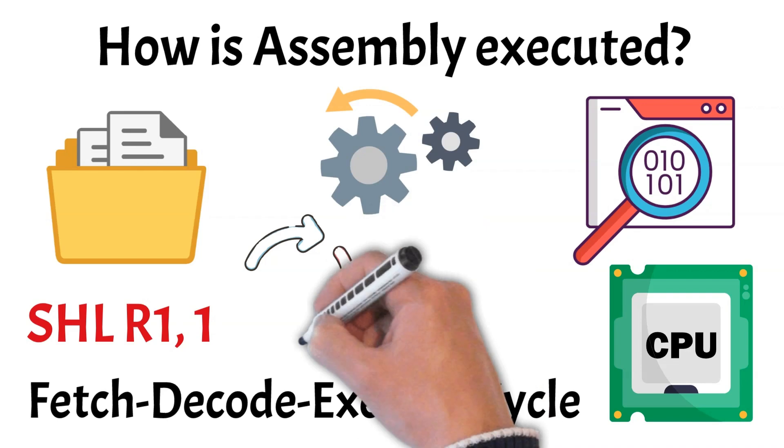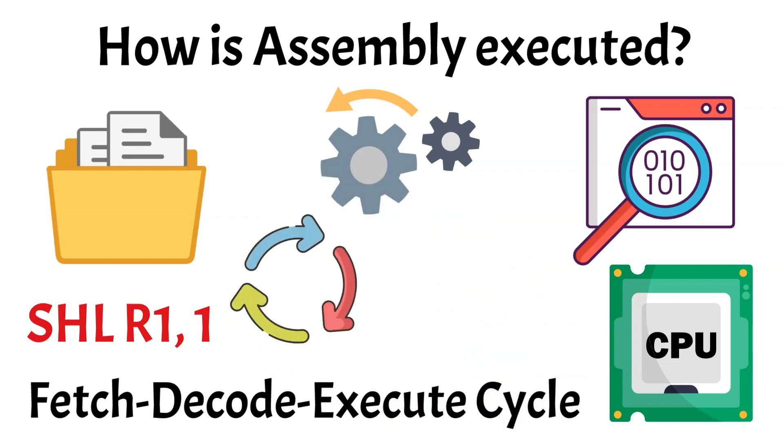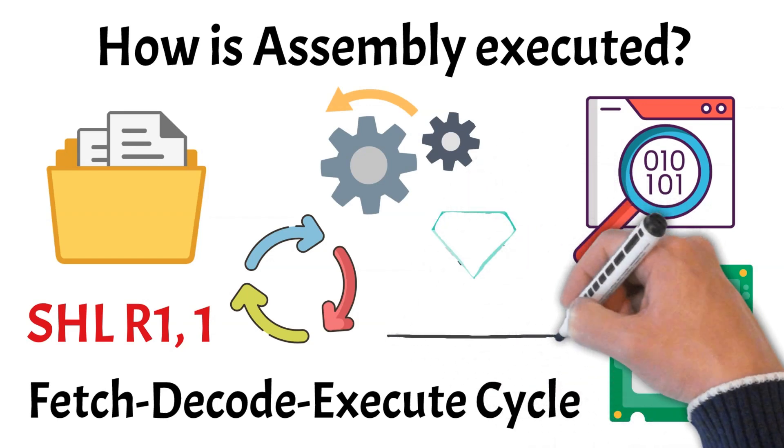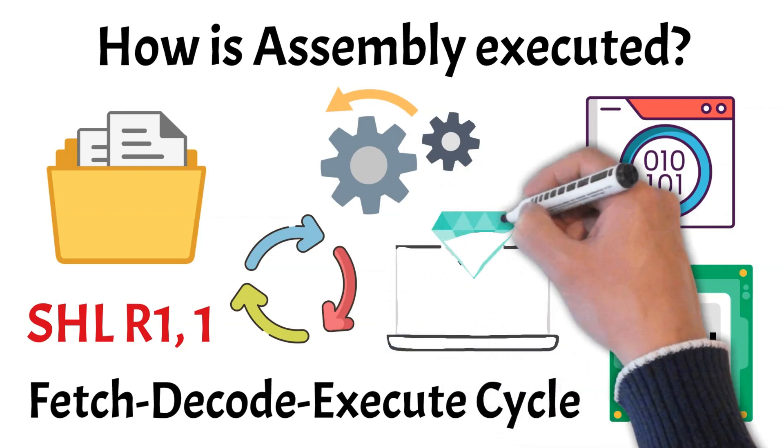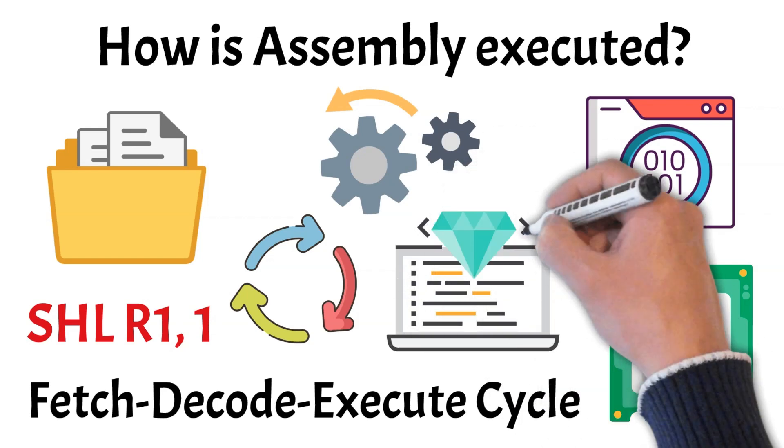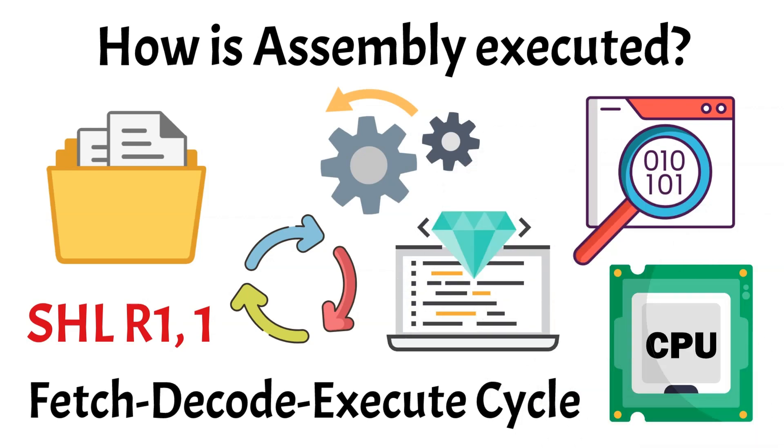This cycle repeats for each instruction in the program, allowing the CPU to process commands sequentially, whether they involve arithmetic calculations, logical operations, or control instructions. By understanding this cycle, we see how assembly language directly translates into actions performed by the computer's hardware, connecting human-readable code to machine-level execution.